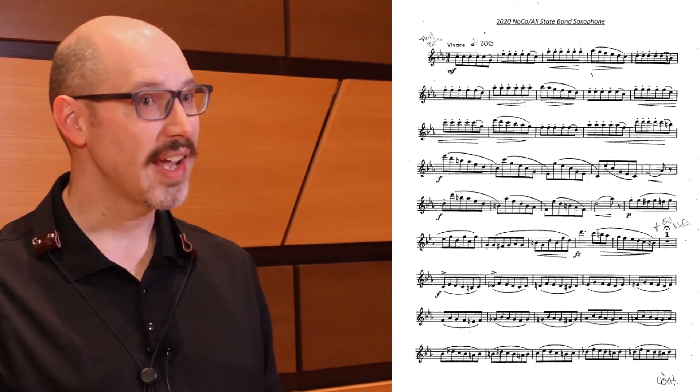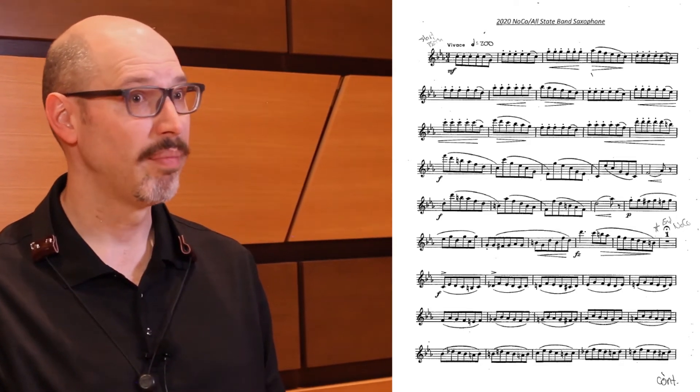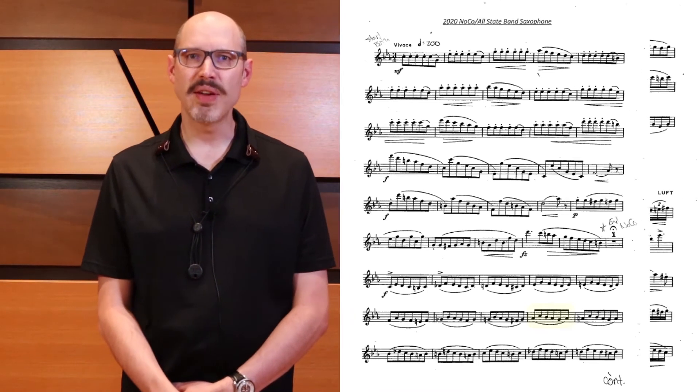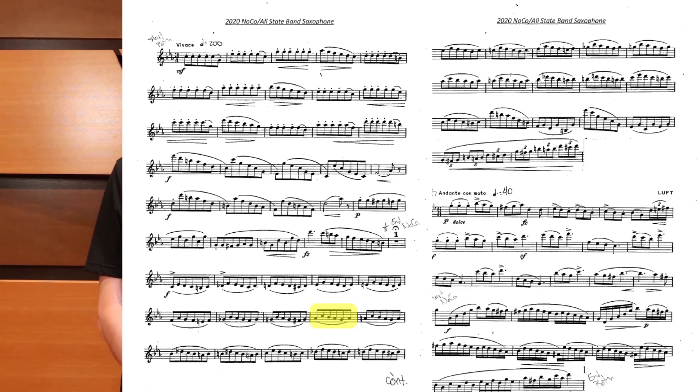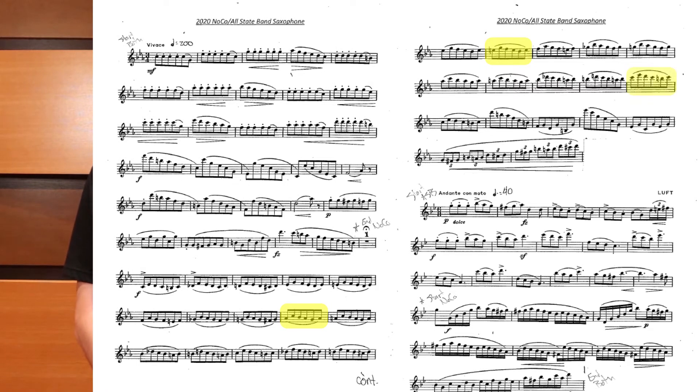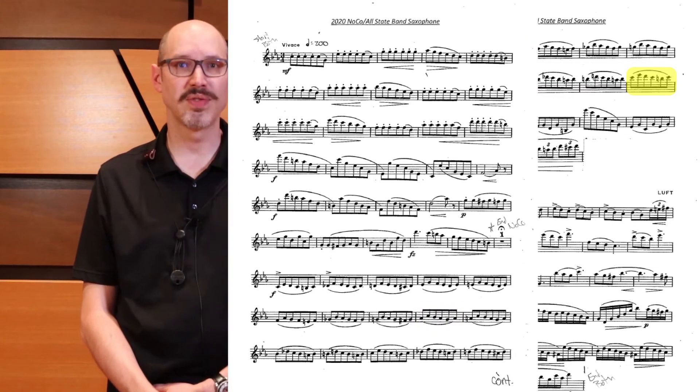The biggest challenge in the second half of the etude will be the breathing. Unless you can circular breathe, it's going to be more or less impossible to make it through this entire section in one breath, even at a very fast tempo. I suggest leaving a few notes out on the and of one in measures 40, 48, and 56 to make it easier to play in a relaxed fashion and with an even sound. You can experiment with different locations for this technique as suits your abilities, but strive to use as few as possible while still being able to play with a great sound and even rhythm.